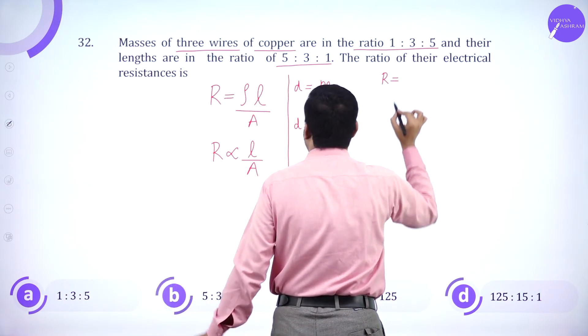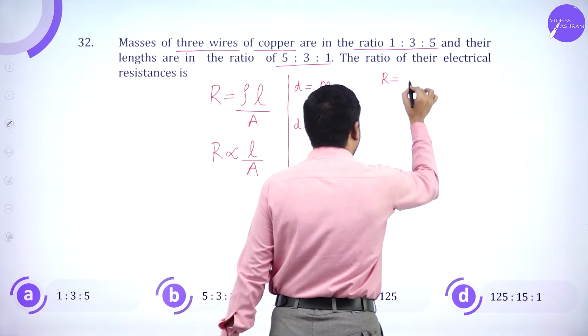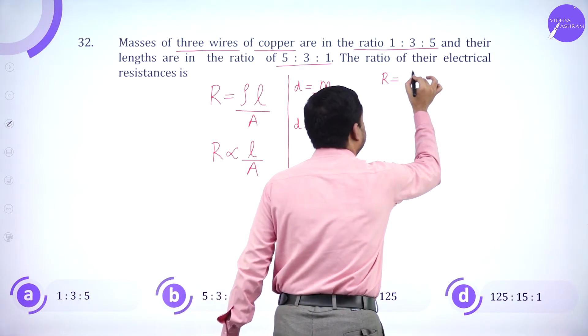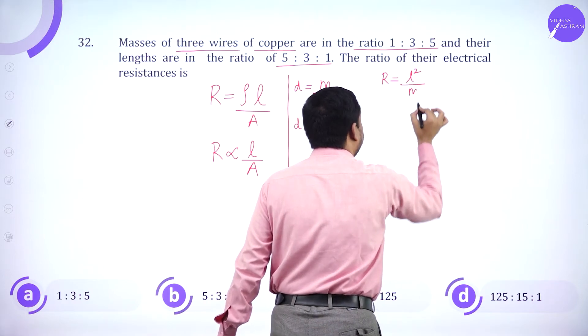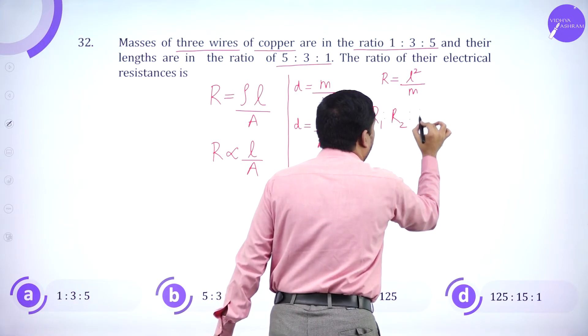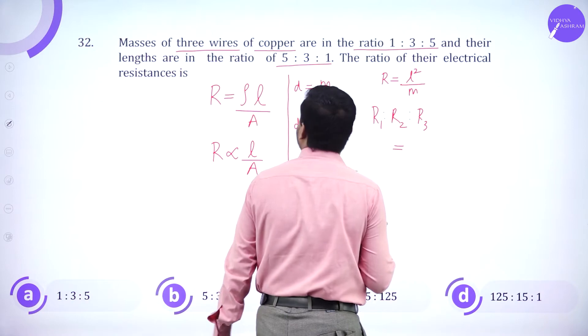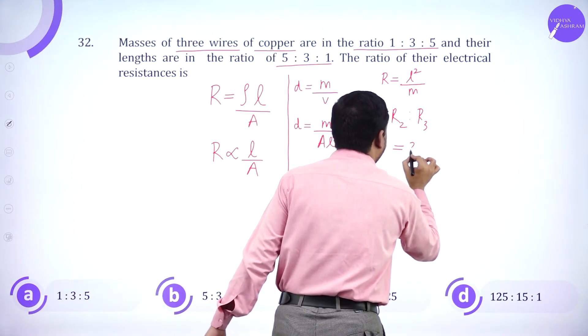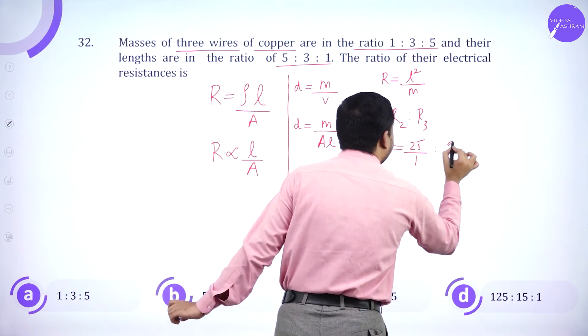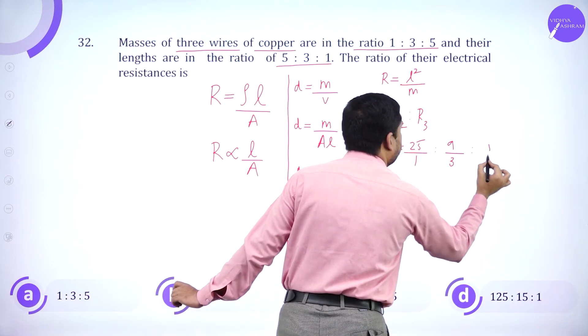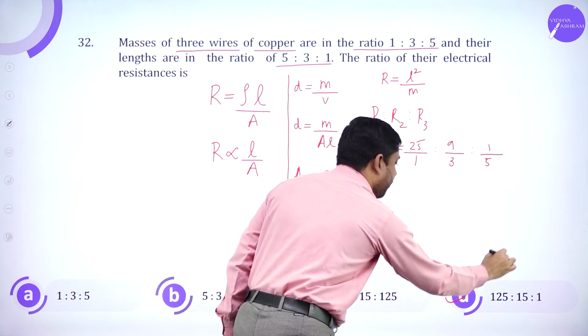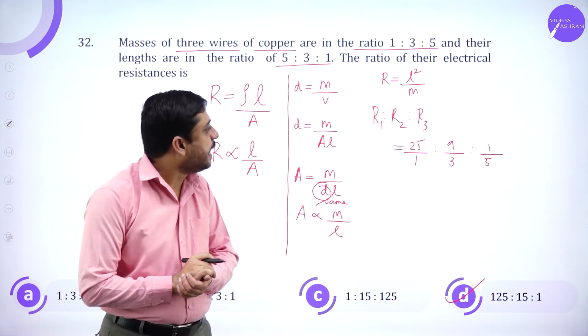So R1 is to R2 is to R3 is L square 5 square 25 by 1 is to 9 by 3 is to 1 by 5. So if I divide and multiply by 5, option D will be the answer.